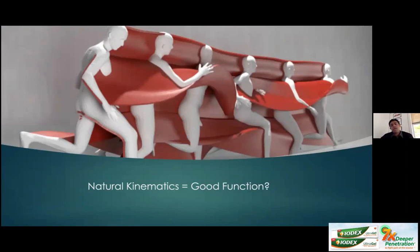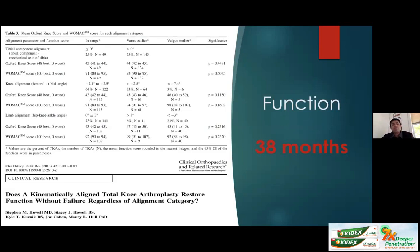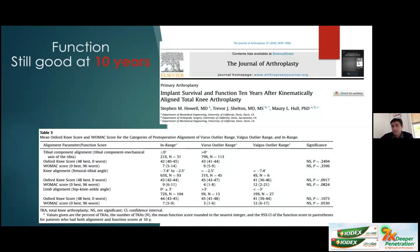This brings us to the million-dollar question: is natural kinematics equal to good function? Professor Howell in the US examined outcomes of kinematically aligned knees within the normal range, varus outliers, and valgus outliers, and found absolutely no difference in functional scores — Oxford score, WOMAC score — at 38 months. He extrapolated this to 10-year outcomes and again found no statistically significant difference. A South Korean paper similarly found absolutely no difference in function between kinematic and mechanically aligned knees.